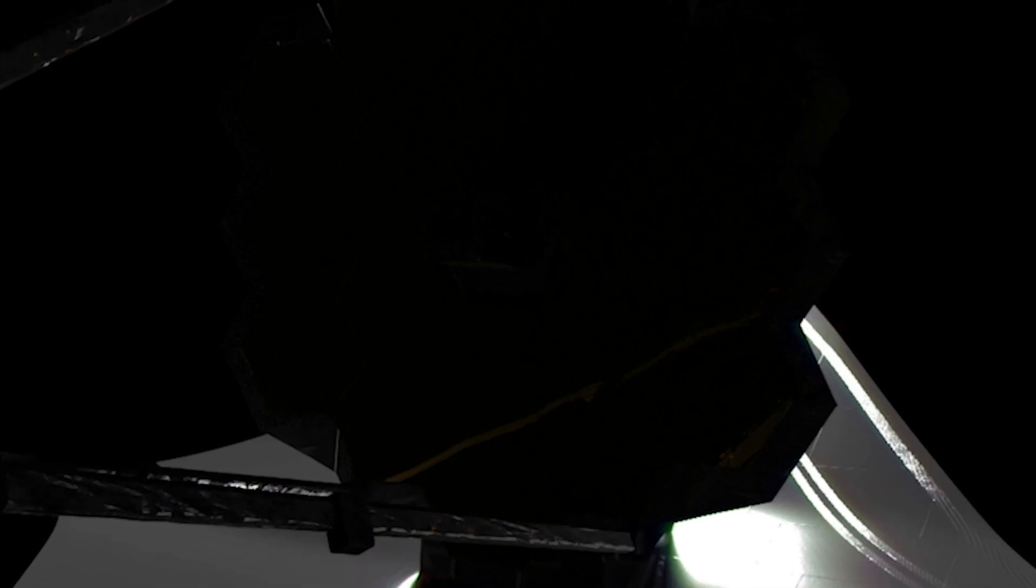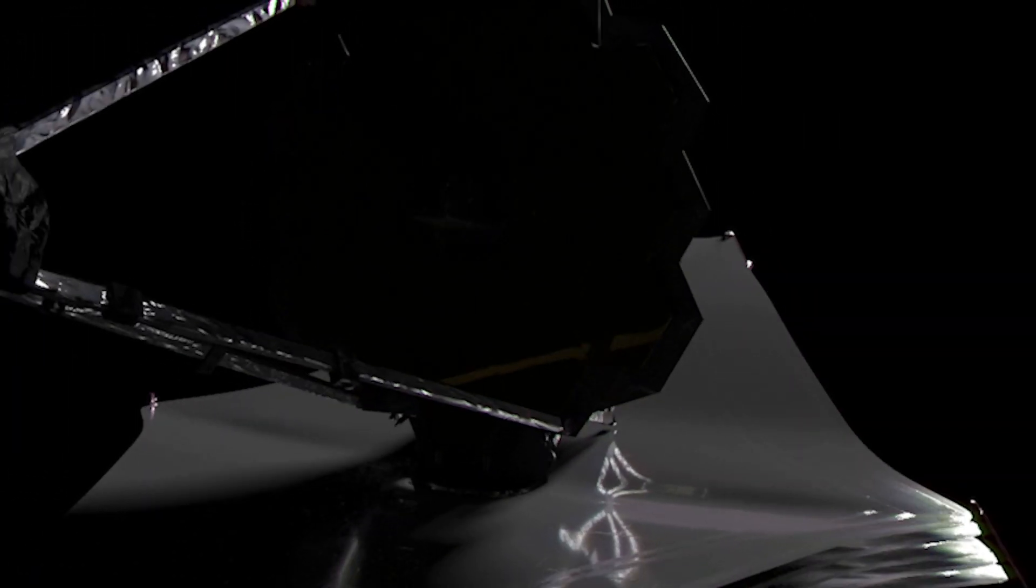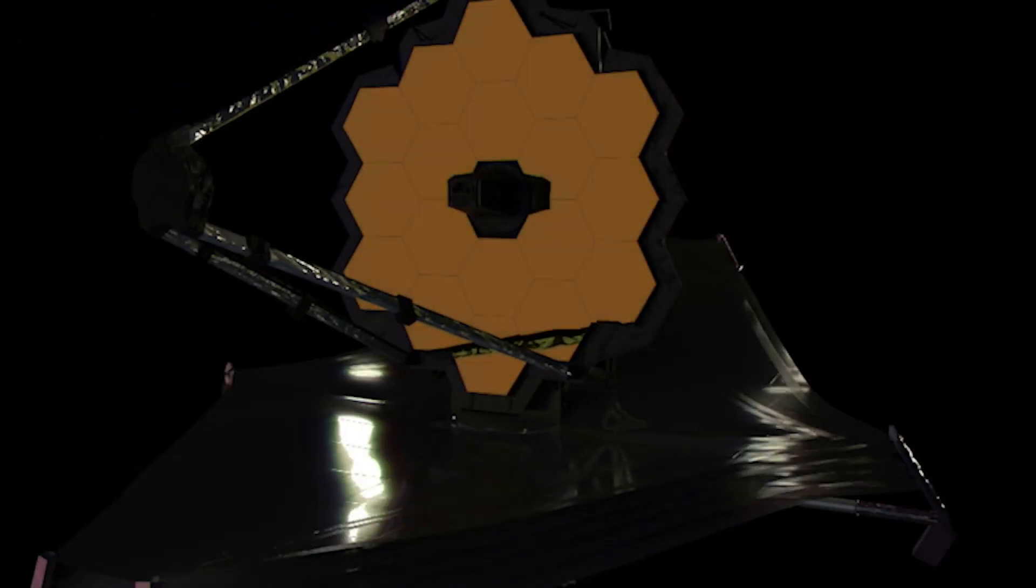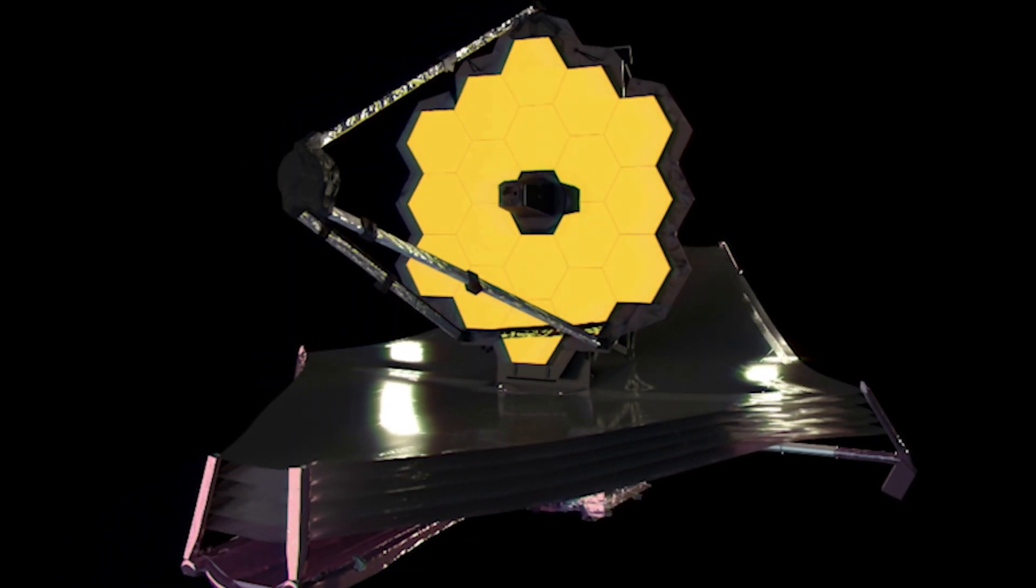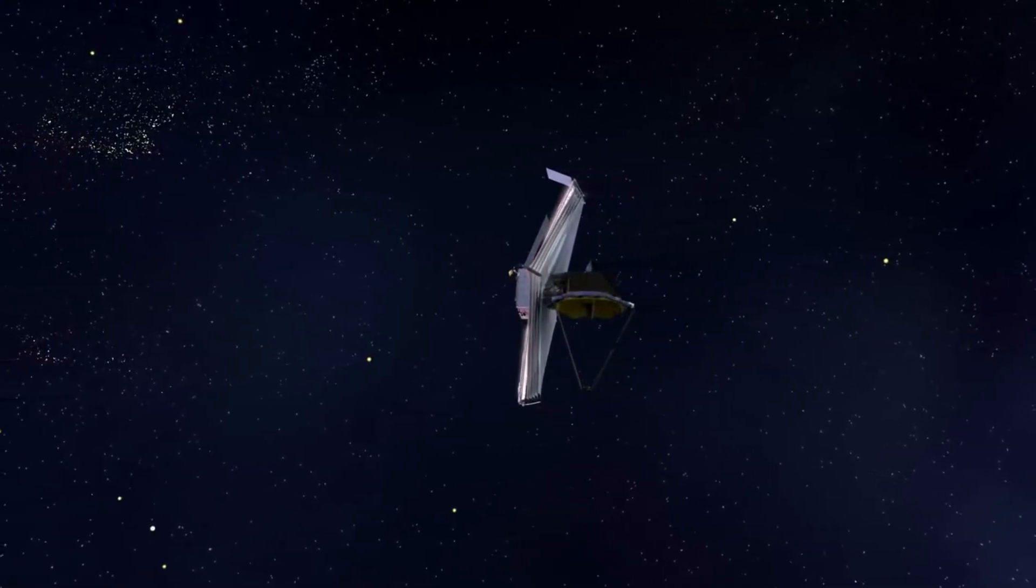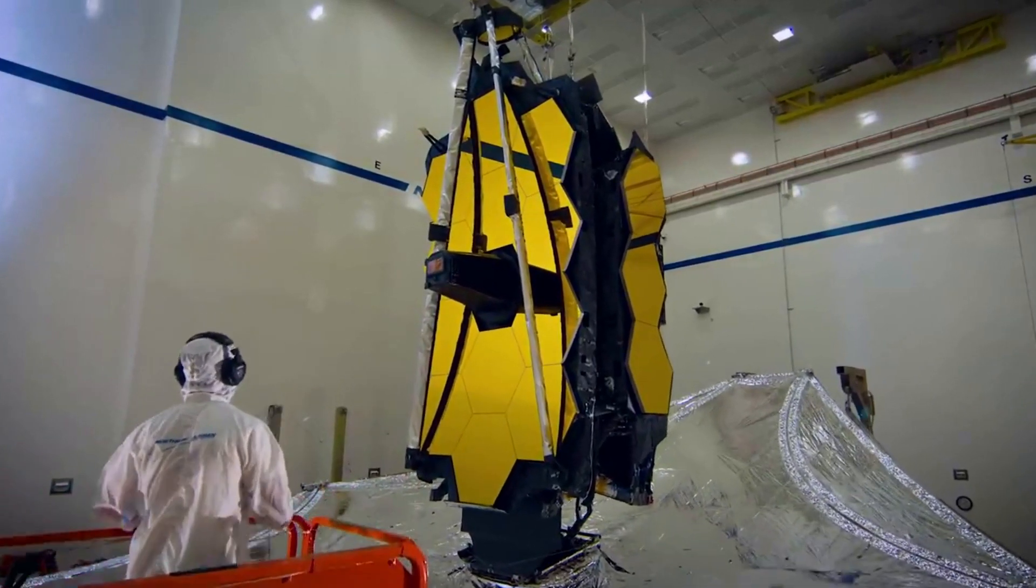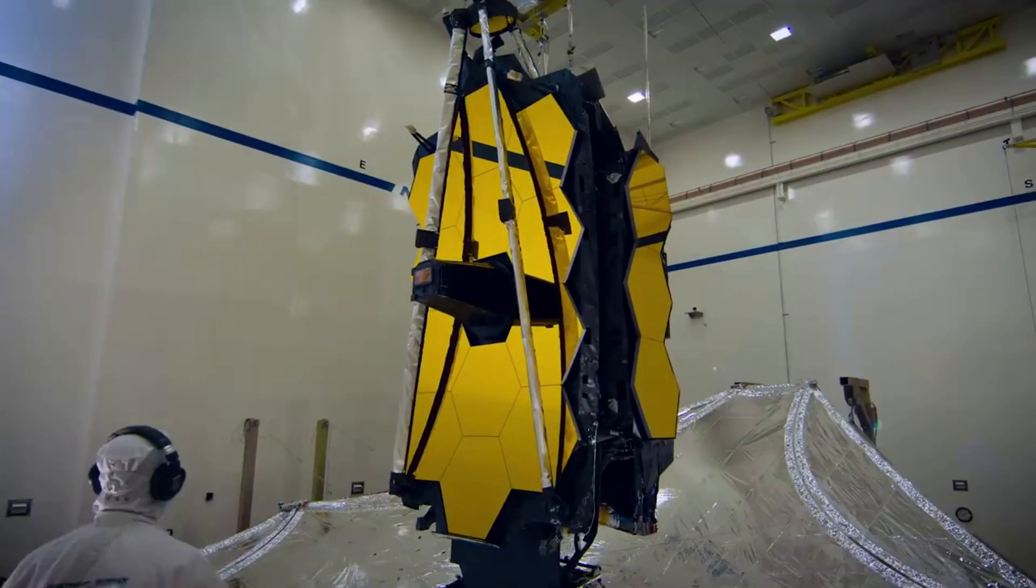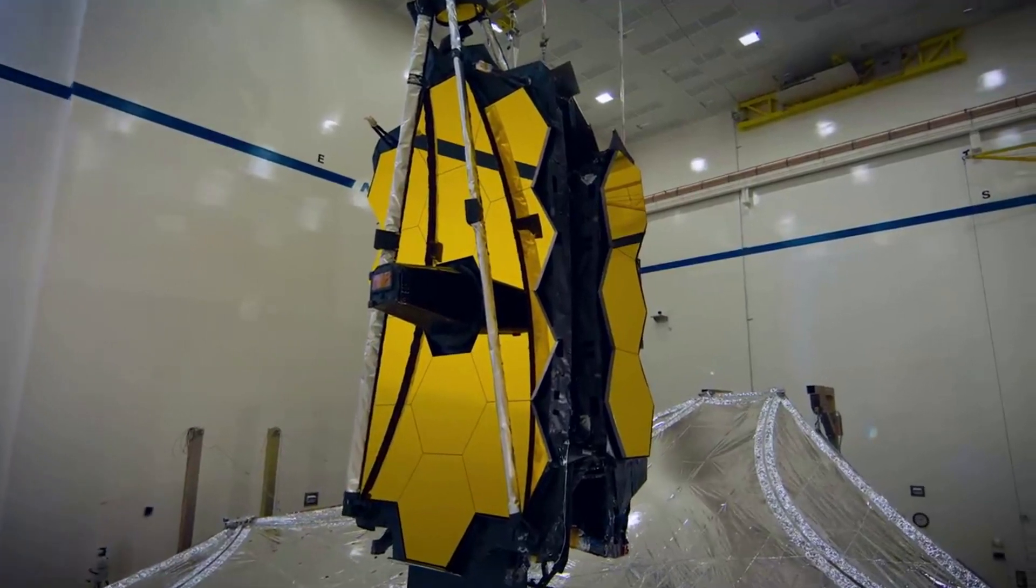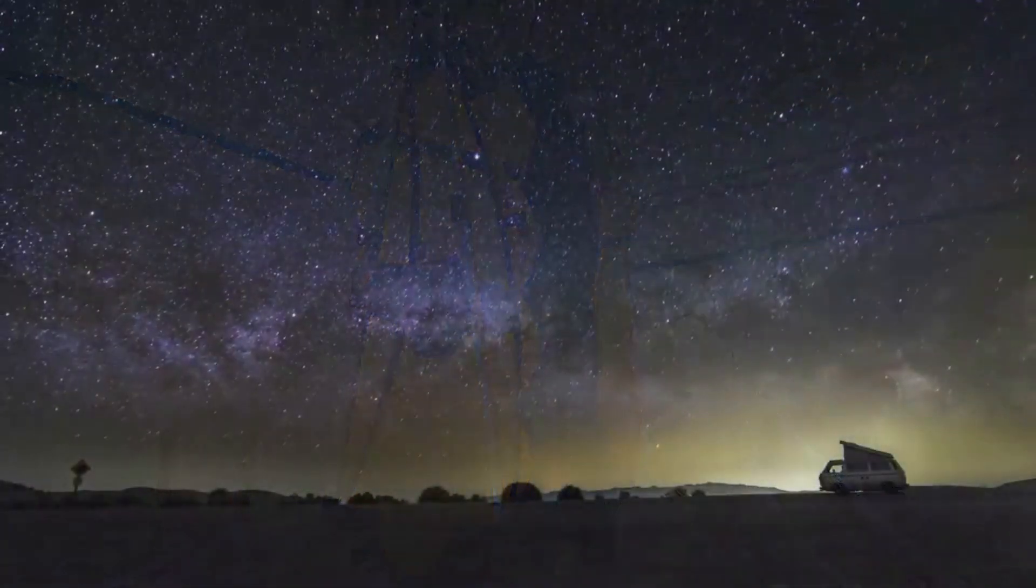In fact, they believe this process will take about two months before scientific operations begin in the summer. This means we are only a few months away from receiving consistent one-of-a-kind images from the JWST. Over the past few months, Webb has not only completed its many steps and stages, but done it better than expected. We can hope this pattern continues as it works on its final tasks prior to being fully operational.